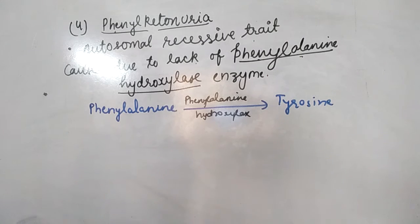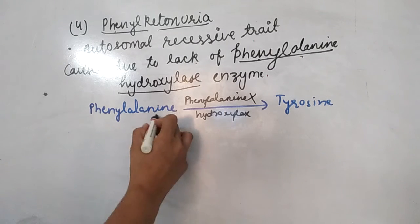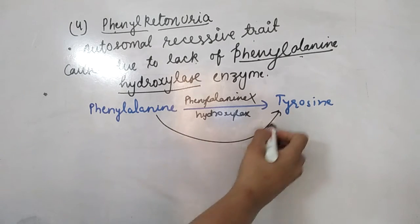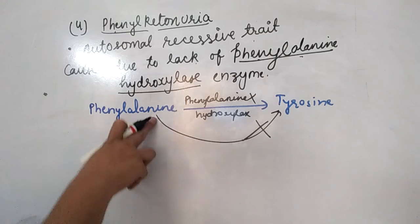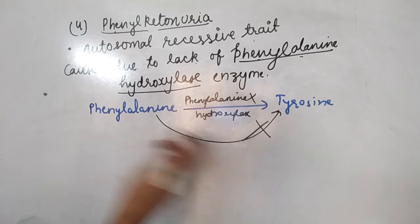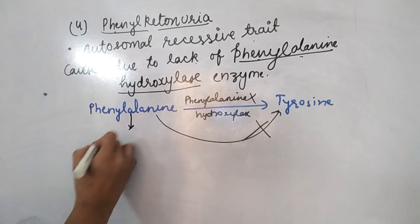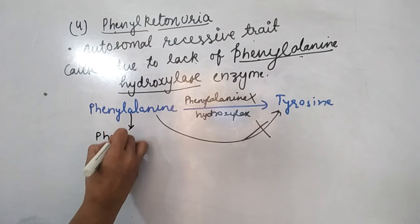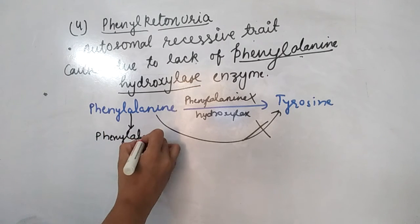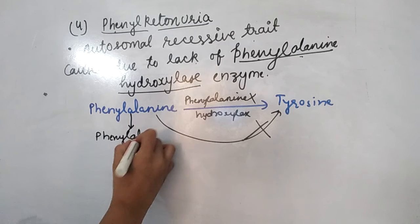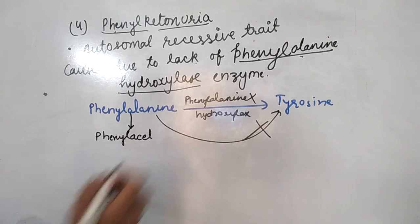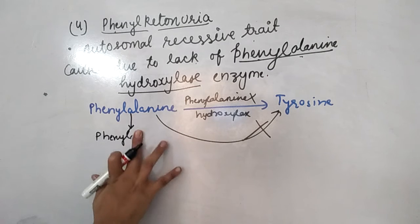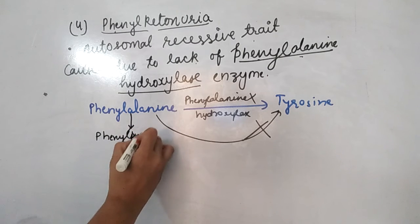When this enzyme is absent, phenylalanine does not convert into tyrosine. Instead, phenylalanine converts into phenylpyruvic acid.